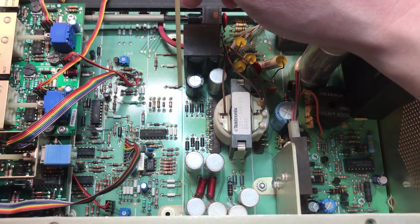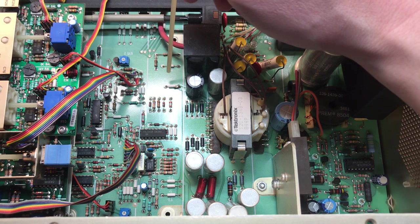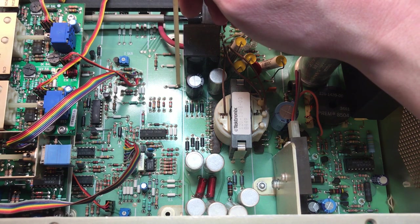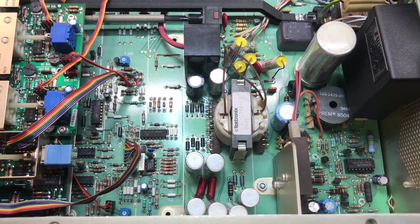There's some additional solder on this jumper right here. This is the 100-volt test point, and it's just a jumper, but for some reason there's a whole bunch of extra solder on there. And you're not going to be able to see it.